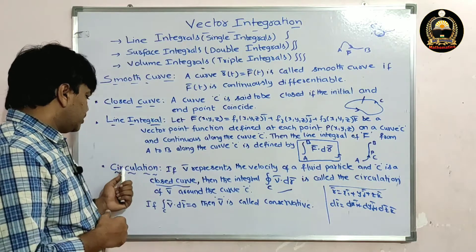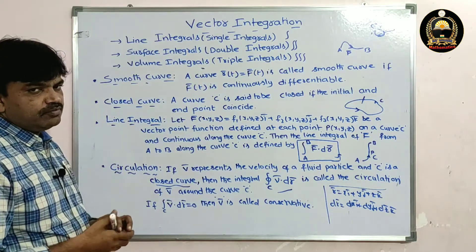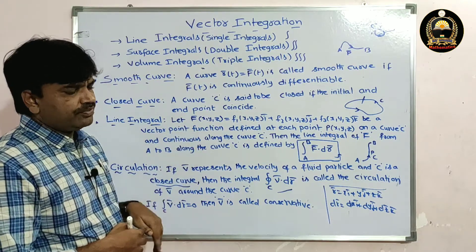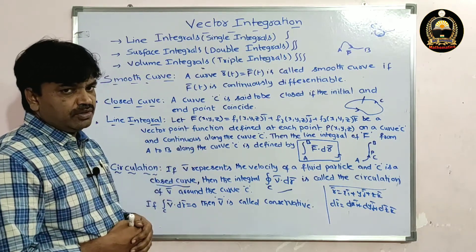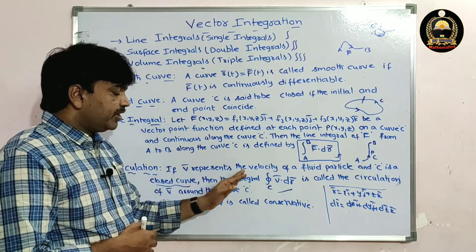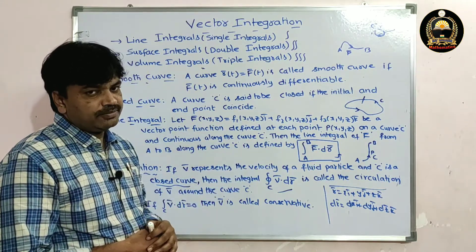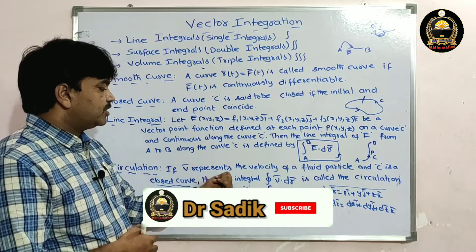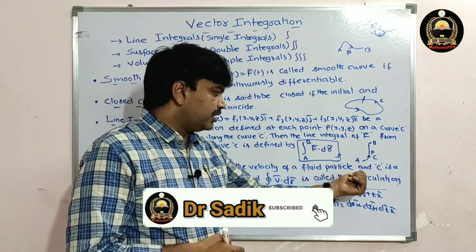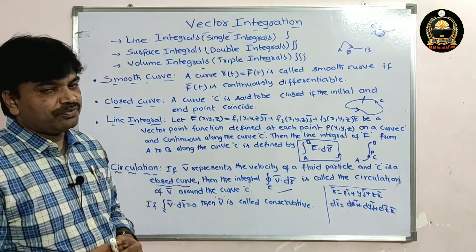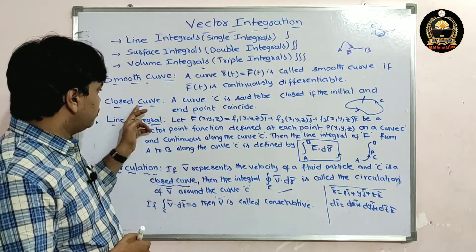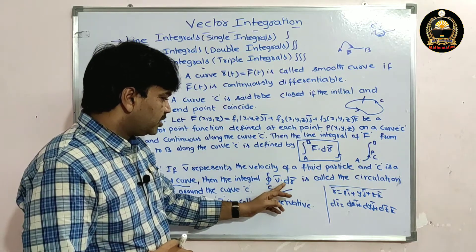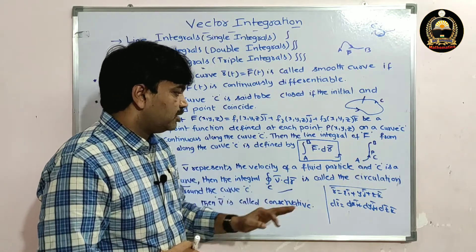Next, a very important definition: circulation. Here v̄ represents the velocity of a fluid particle, and C is a closed curve. Then the line integral over the closed curve C of v̄·dr̄ is called circulation. Whenever you observe the circle symbol on the integral, it indicates a closed curve.